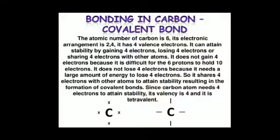If carbon wants to attain stable configuration or noble gas configuration, then carbon needs 4 more electrons to complete its outermost orbit. The electrons present in the outermost orbit of an element or of an atom are known as valence electrons.